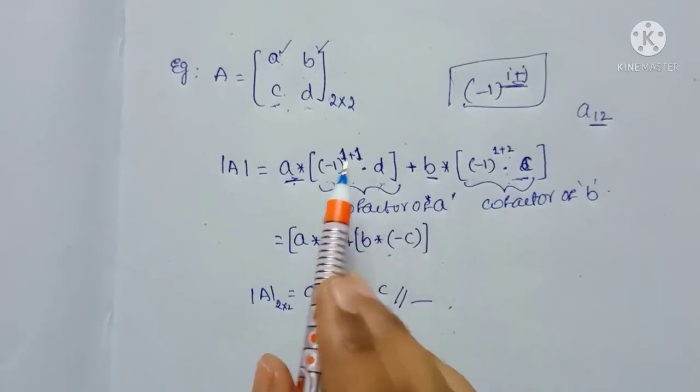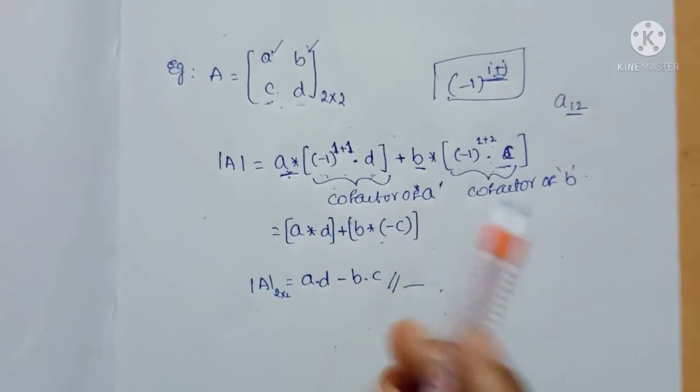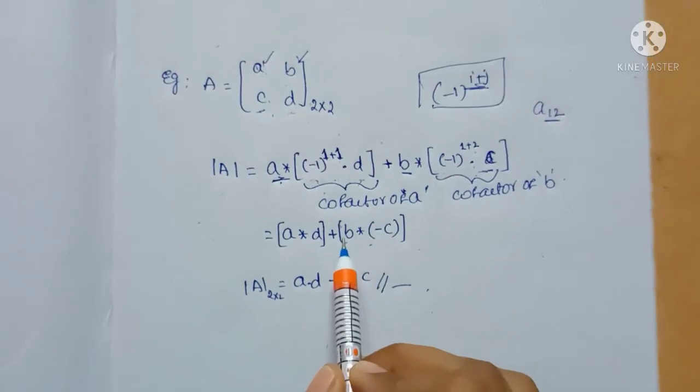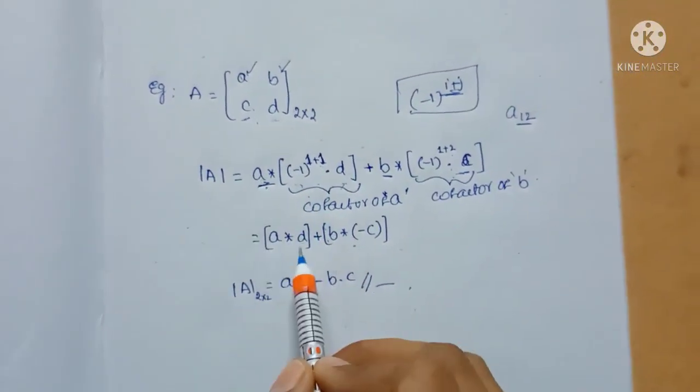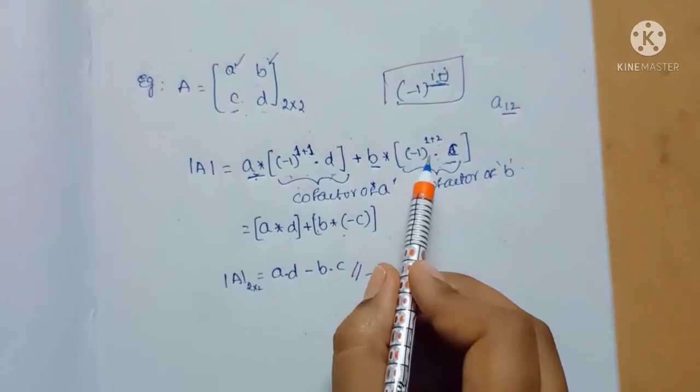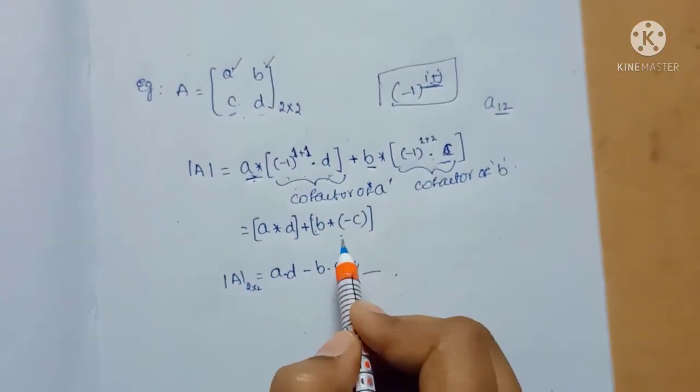Then by calculating, we say minus 1 to the power 2 is 1, and A times D plus B times minus 1 to the power 3, so minus C.